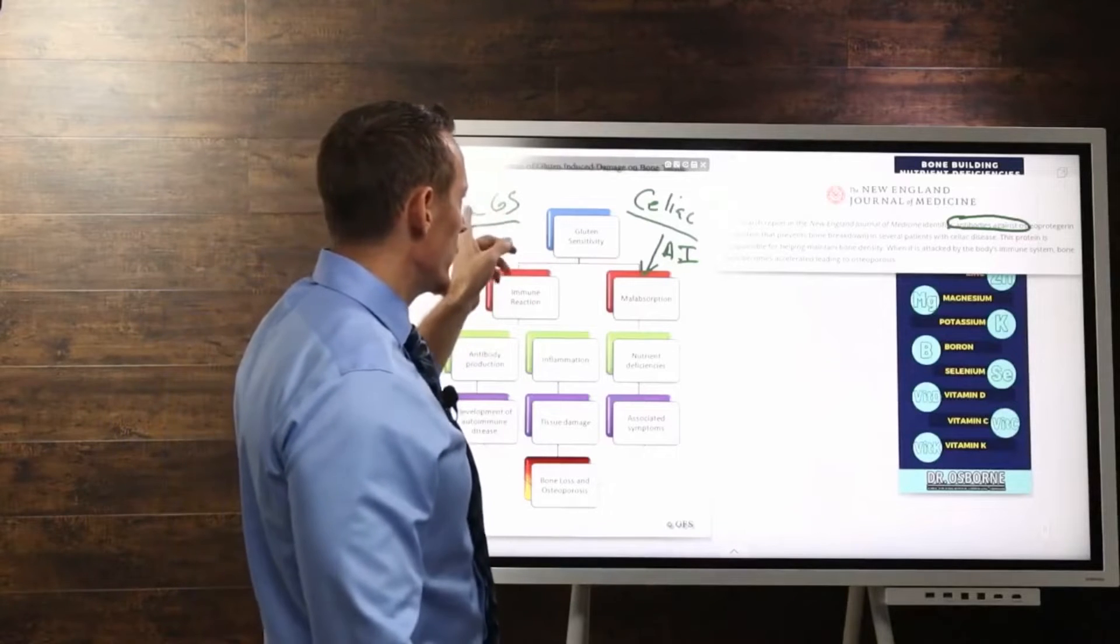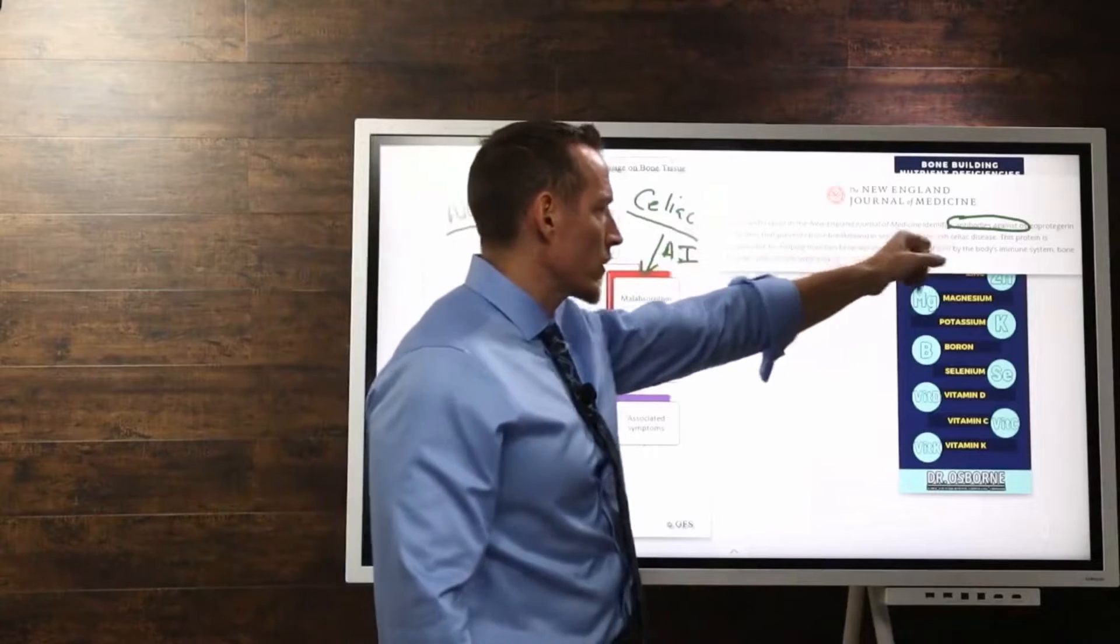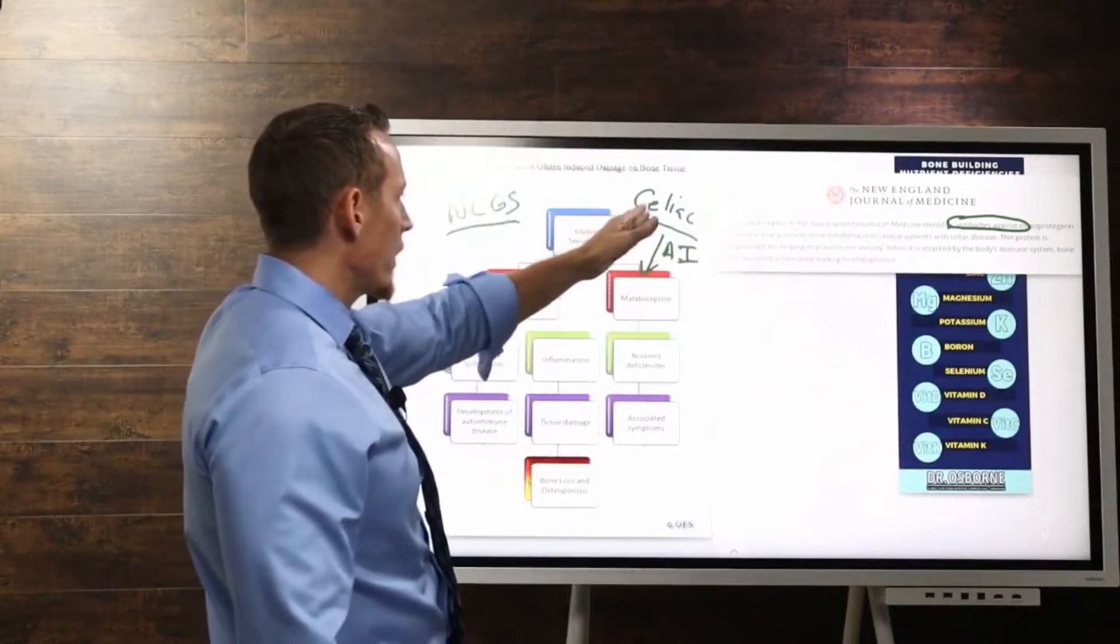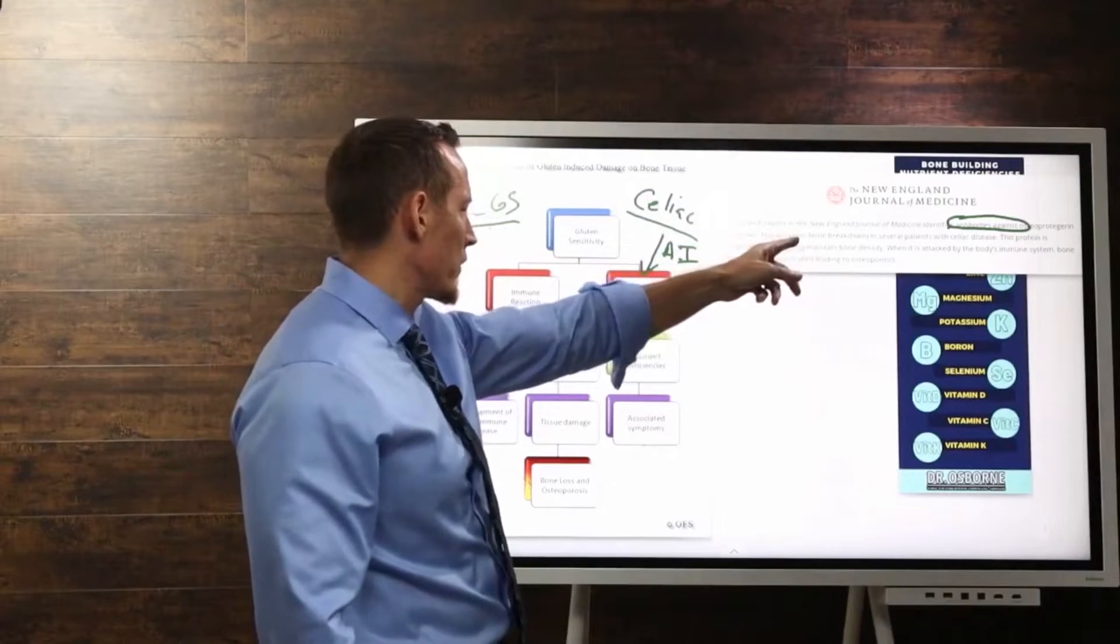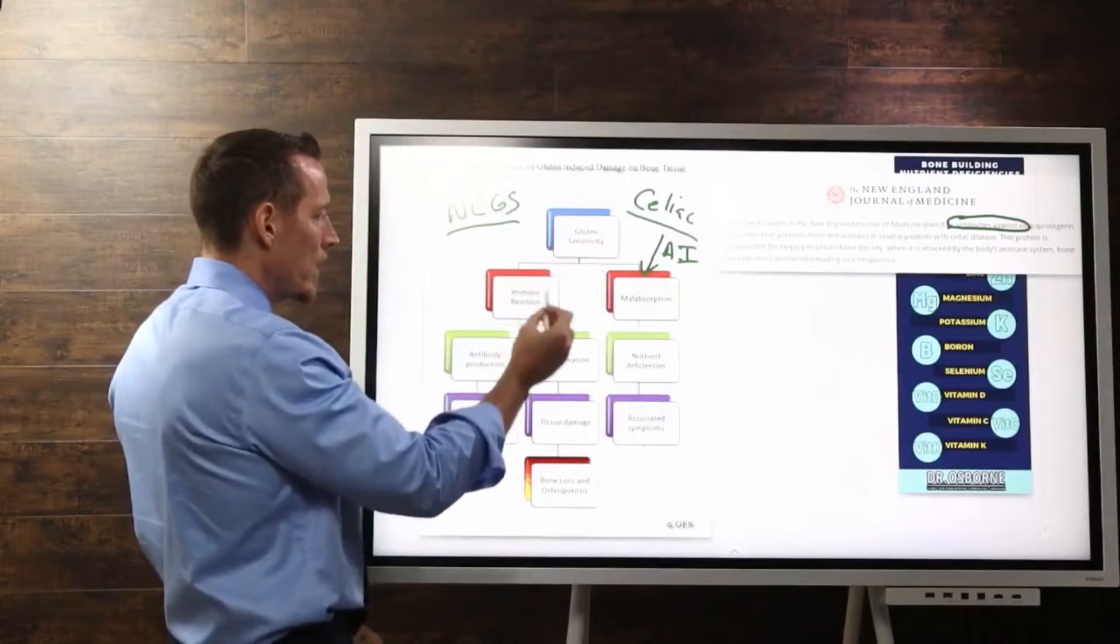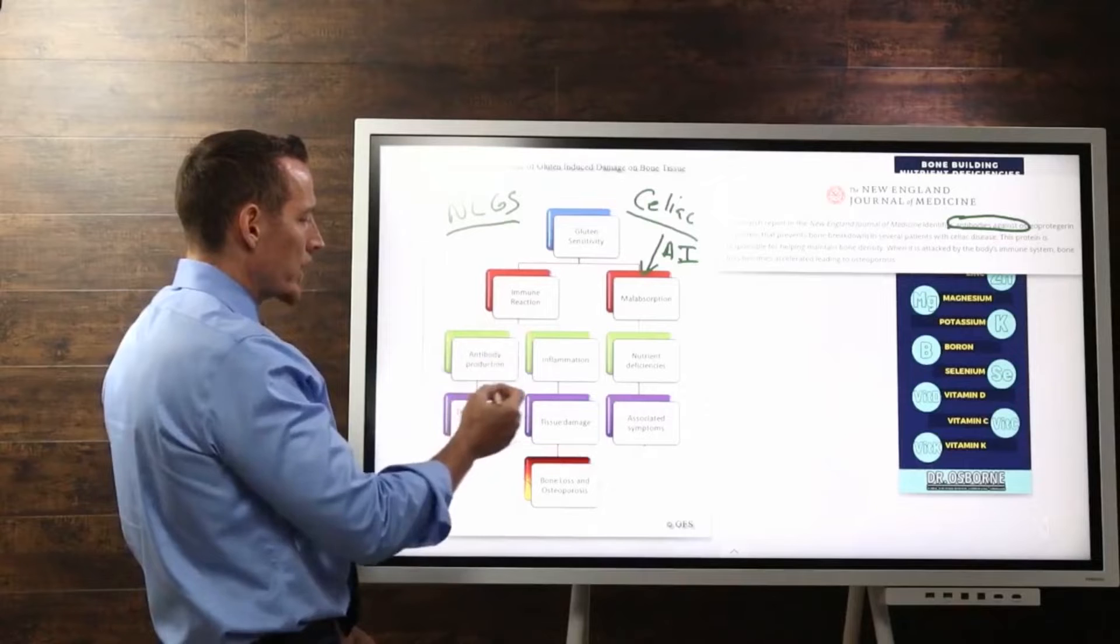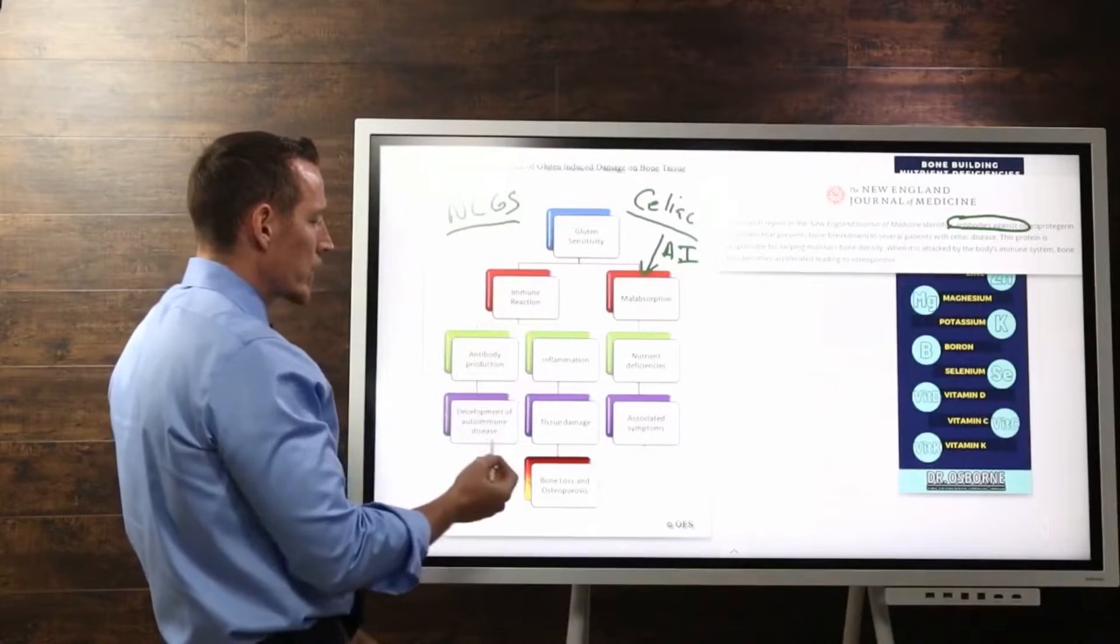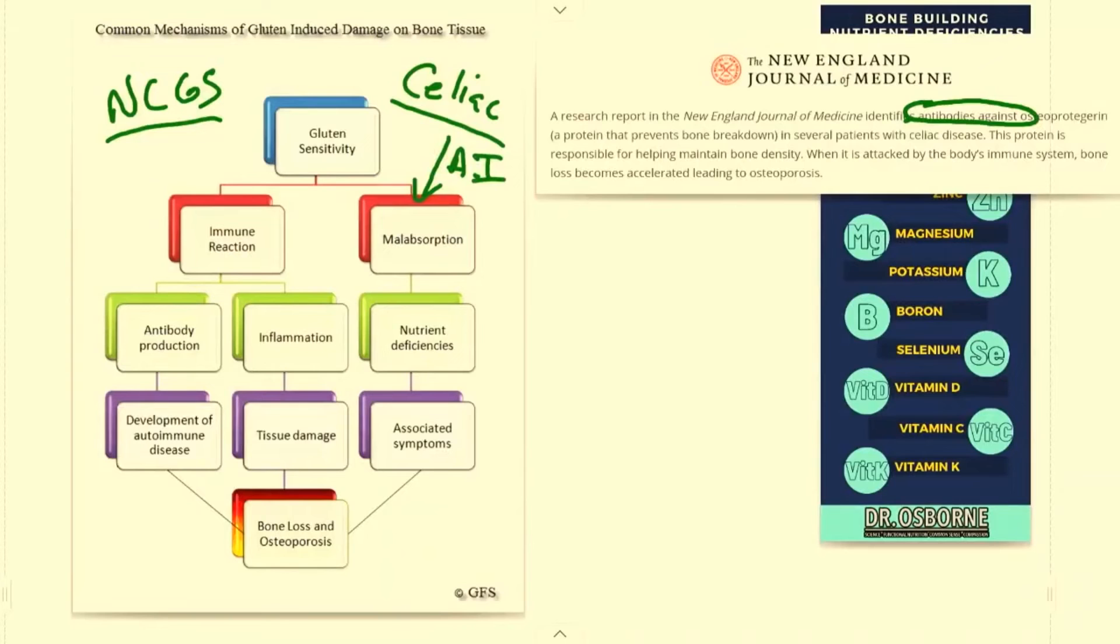It's the gluten itself that can contribute to the production of these antibodies, so you don't necessarily have to have celiac disease. This is an autoimmune type of response. Gluten sensitivity immune reaction leads to antibody production against osteoprotegrin, which then leads to the development of autoimmune disease—this bone loss that shows up—and generally this is a more aggressive type